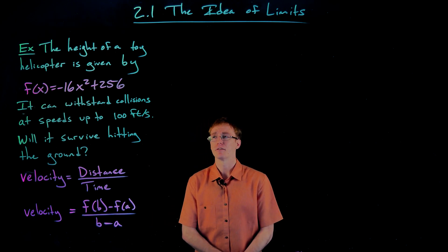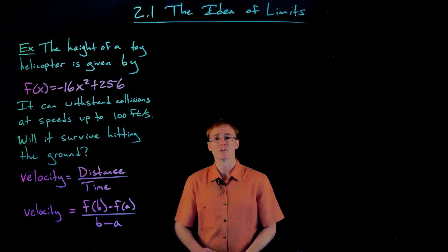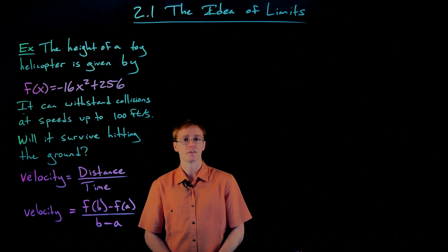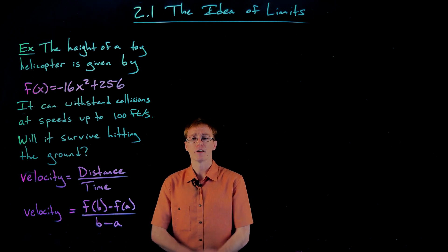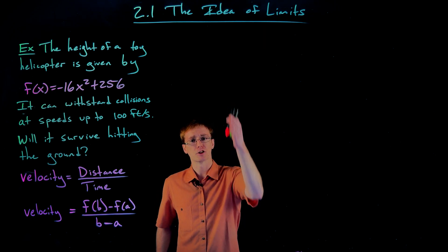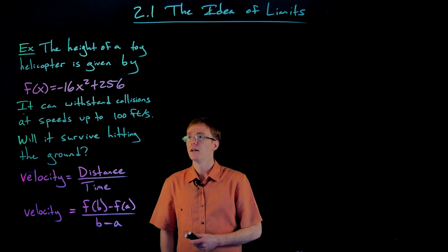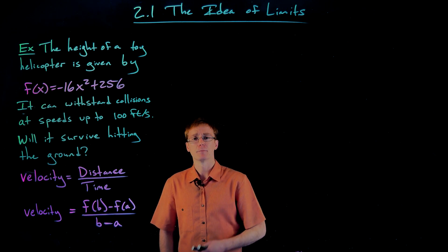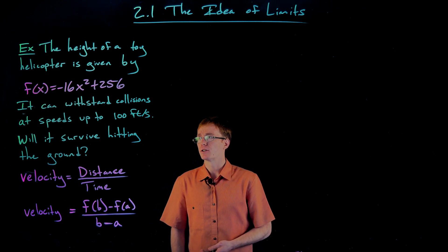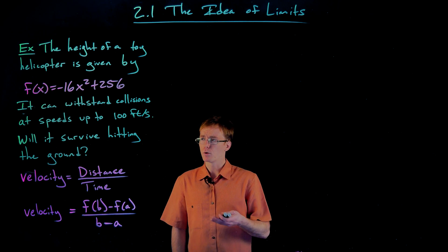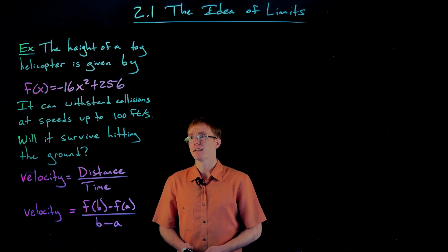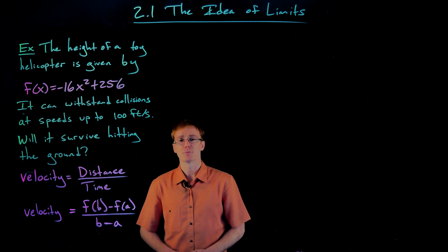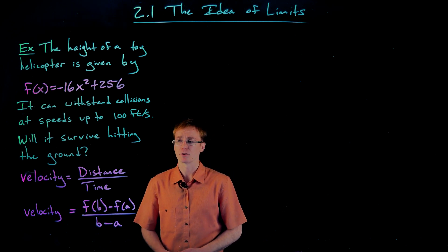So in this example, we are given a function f of x, which is equal to negative 16x squared plus 256. This model gives us the height of a toy helicopter as it moves through the air — it's moving straight up and straight down. X is going to be measured in seconds, and we're trying to answer the question: will this helicopter survive hitting the ground if it can withstand collisions at speeds up to 100 feet per second?